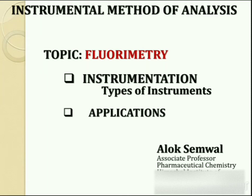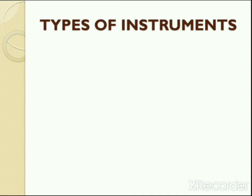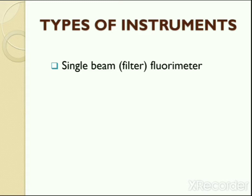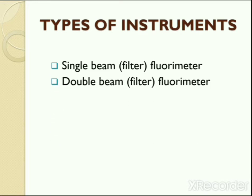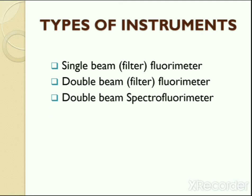Hello students, my name is Alok Samwal and in today's lecture I am going to talk about types of fluorimeters and applications of fluorimetry. There are three types of instruments used in fluorimetry: single beam fluorimeter, double beam fluorimeter, and double beam spectrofluorimeter. Single beam and double beam fluorimeters are filter fluorimeters.